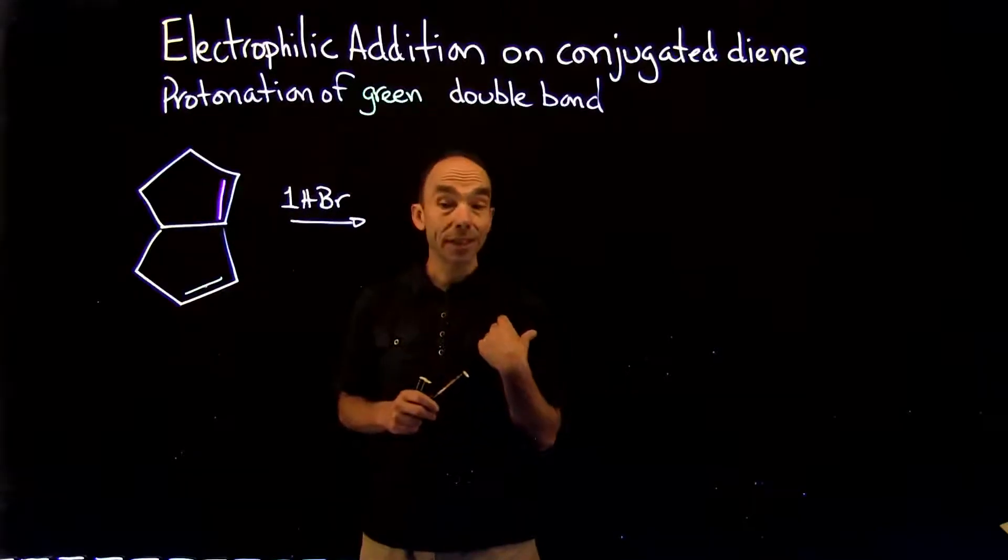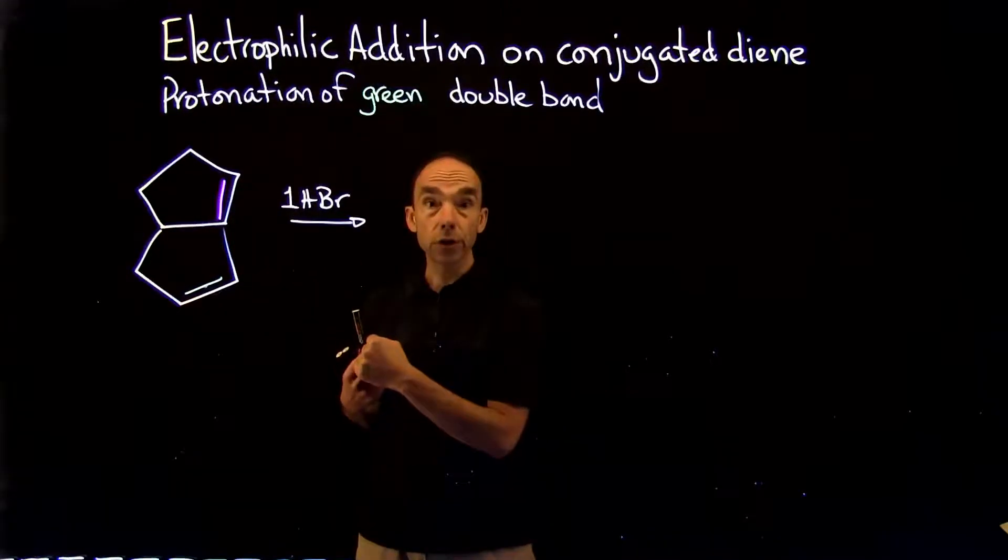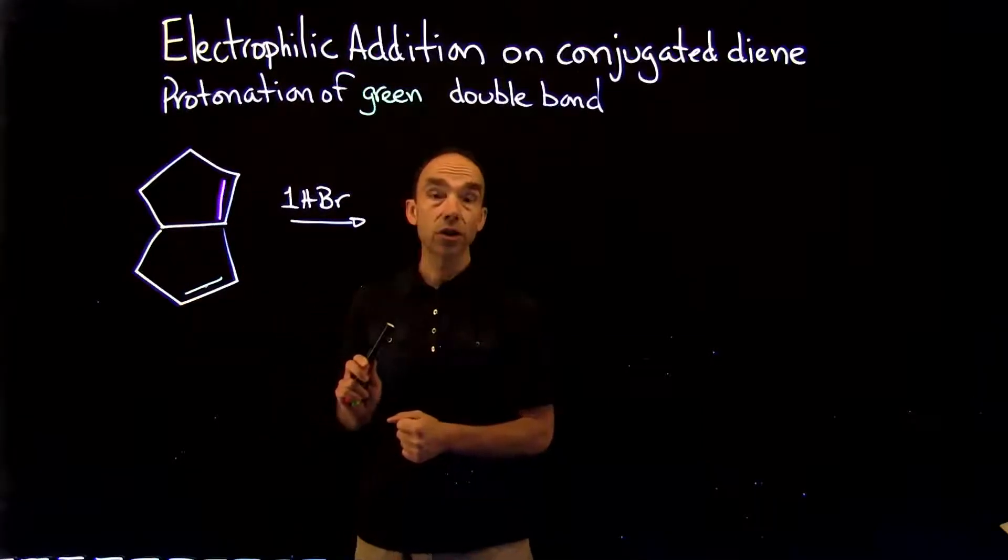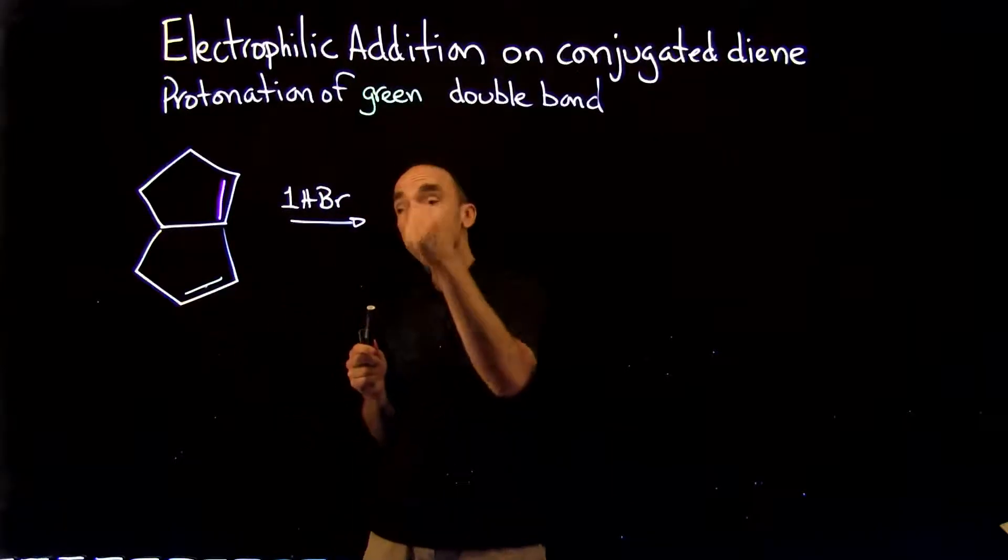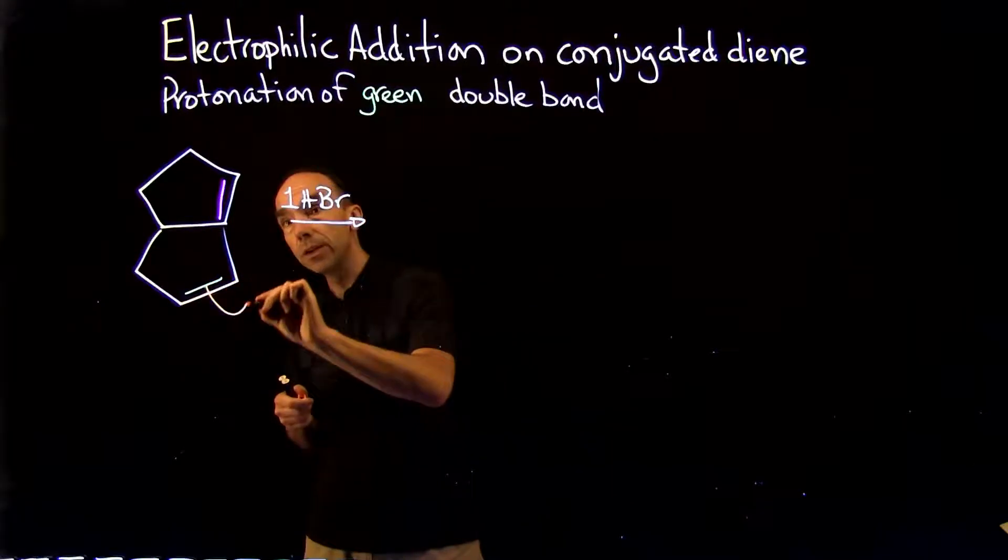This video will present electrophilic addition on a conjugated diene. On this specific conjugated diene, there are two double bonds. Reaction can operate differently.